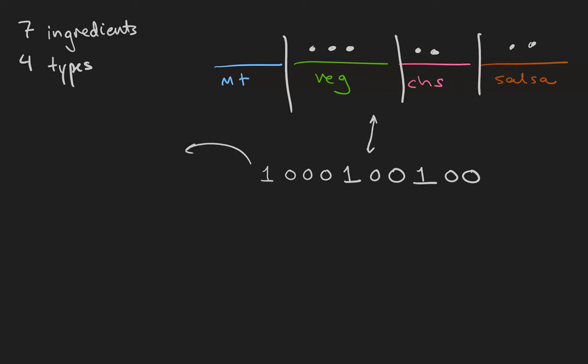So really what we're asking is, how many of these bit strings are there with three ones and seven zeros?